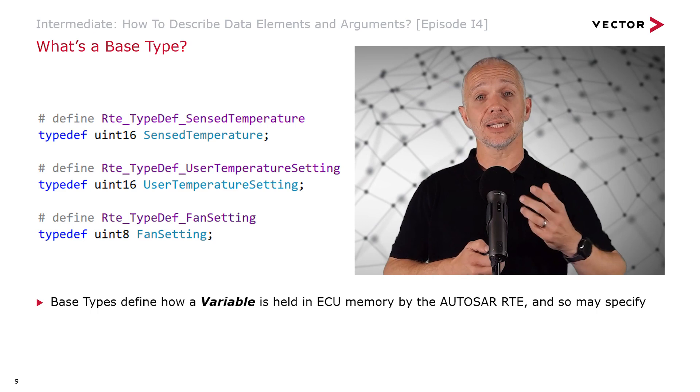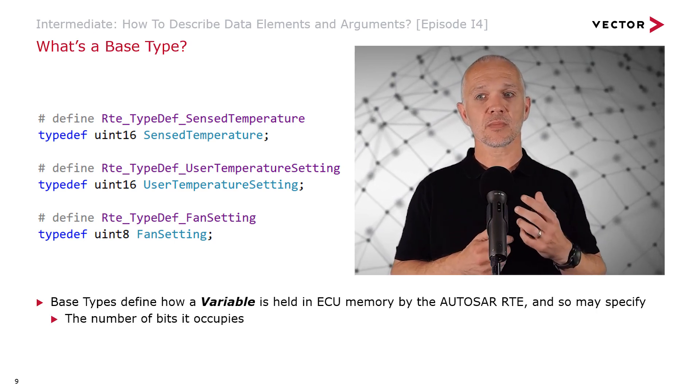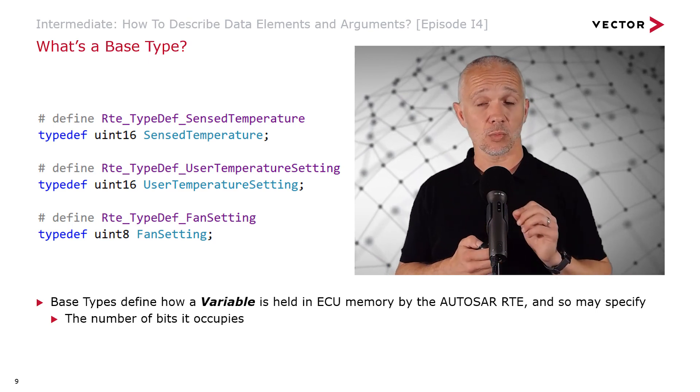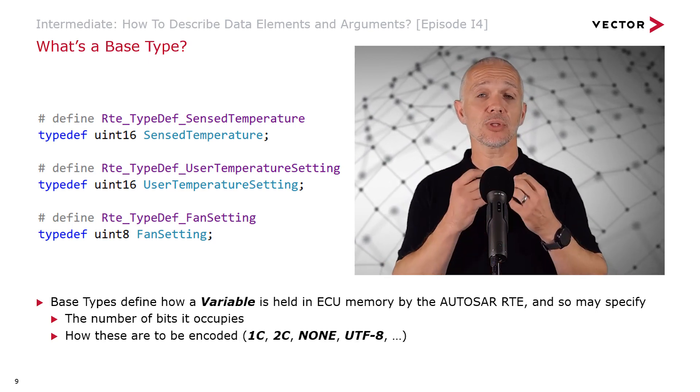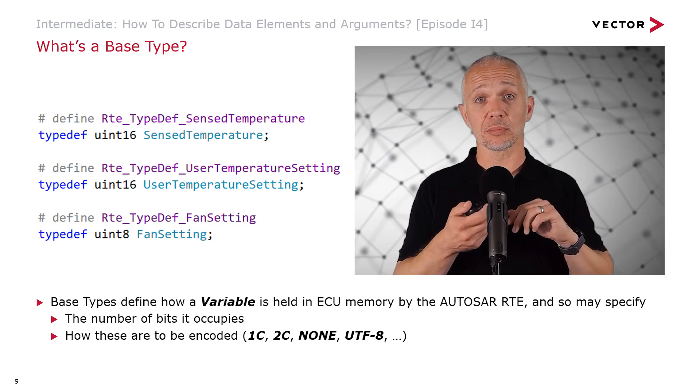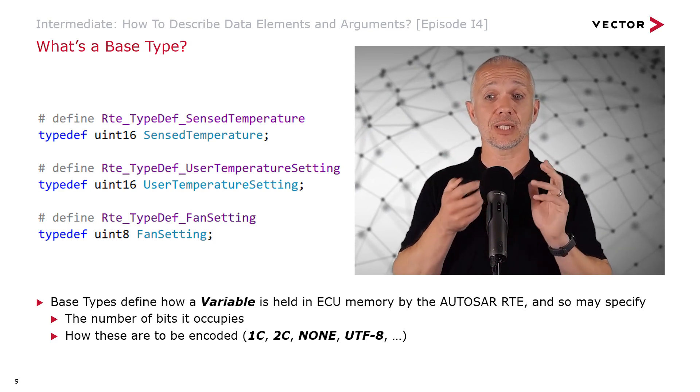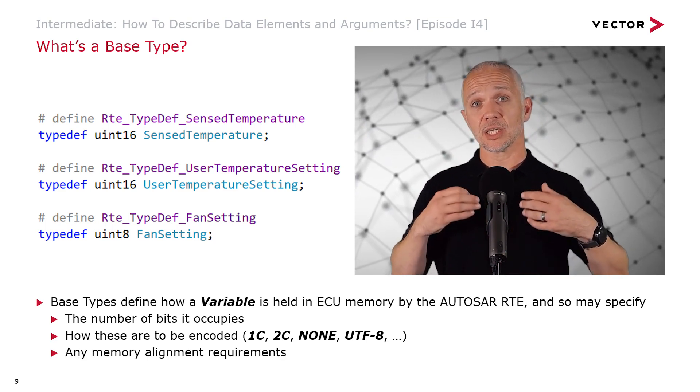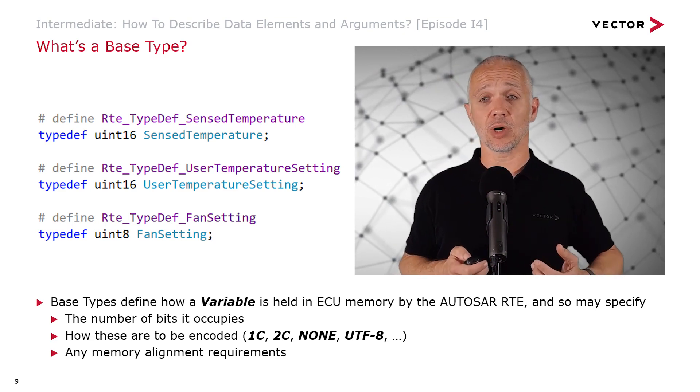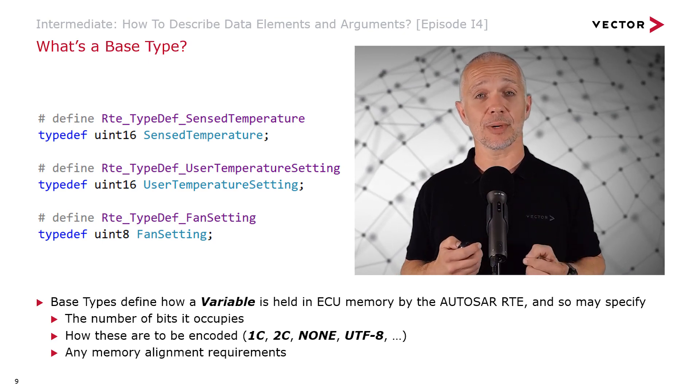Base types define really how a variable is going to be held in ECU memory by the AUTOSAR basic software and RTE. This means that when we're specifying base types, we'll think about aspects such as the number of bits that we need in memory, how they are to be encoded in memory—is it ones complement, twos complement, is there no encoding, is it UTF-8 because we're working with a character and so on? And we may also think about memory alignment requirements. We're really close to real ECU memory when we're thinking about base types.